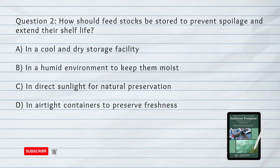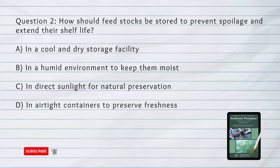Number 2. How should feedstocks be stored to prevent spoilage and extend their shelf life? A. In a cool, dry storage facility. B. In a humid environment to keep them moist. C. In direct sunlight for natural preservation. D. In airtight containers to preserve freshness.